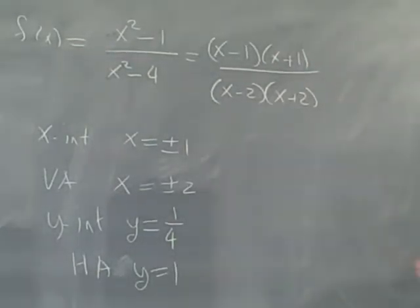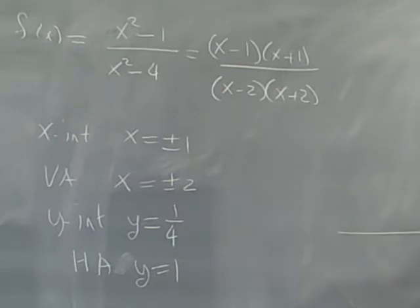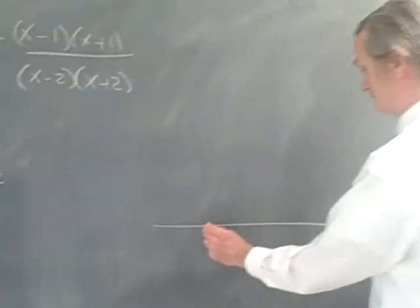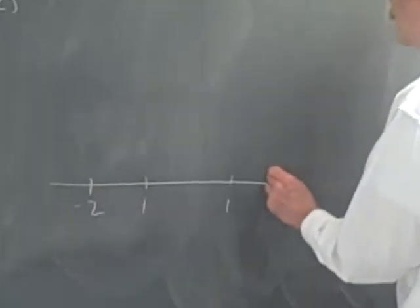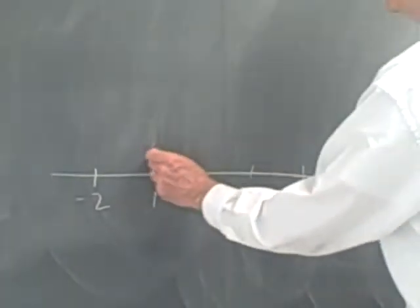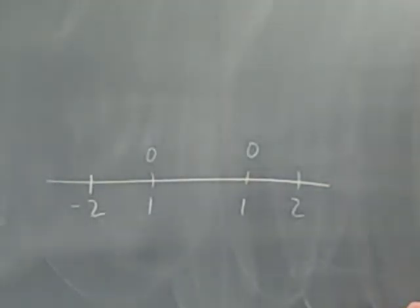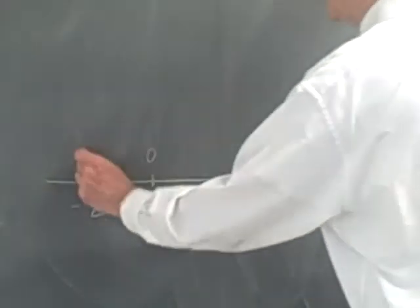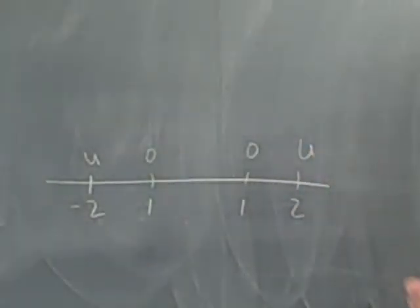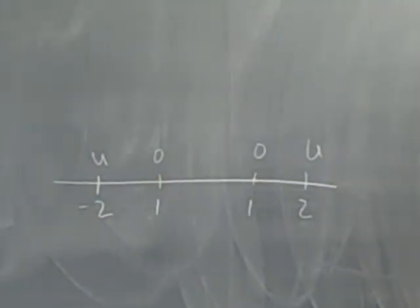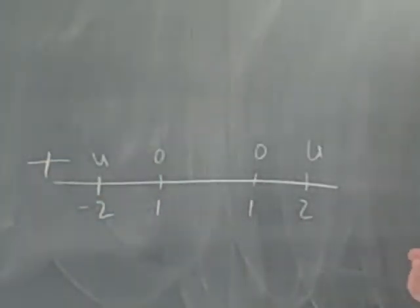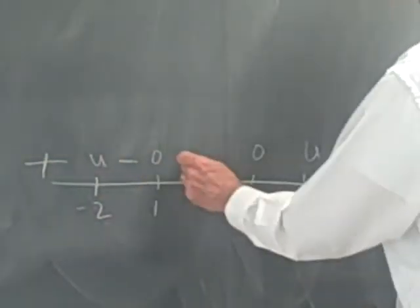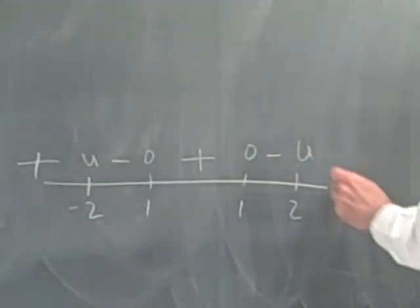Now let's draw out a sign chart for this function. So we have minus 2, minus 1, 1, and 2. The function's 0 here. It's 0 here. It's going to be undefined here, undefined here. And it's going to be very positive to the far left. It's going to be negative over here, positive in between, negative here, positive here.